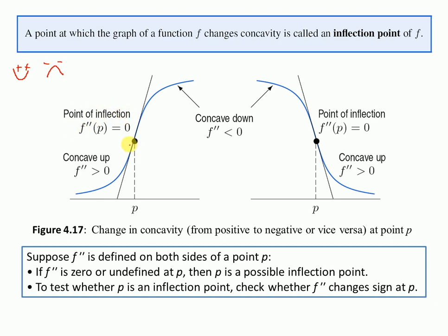At the inflection point, your second derivative of the function should be zero. If you are using the first derivative, you are testing for the critical point. If you are using the second derivative, you are testing for the point of inflection. If you have concave up, your second derivative should be positive — that's the smiling face. If you have concave down, your second derivative should be negative.